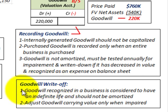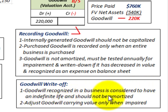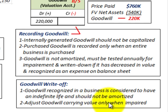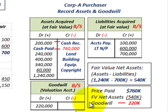To review the goodwill write-off rules: goodwill recognized in a business is considered to have an indefinite life and should not be amortized. You adjust the goodwill carrying value only when it is impaired, and that impairment test is performed annually.